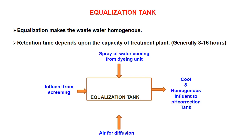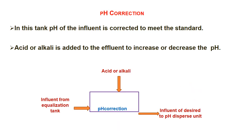Here we can see the equalization tank — it makes the wastewater homogeneous, and retention time depends upon the capacity of the treatment plant, typically 8 to 16 hours. The influent comes after screening into this tank, spray of water from the dyeing unit is added, air is infused, and everything is mixed together to get a cool and homogeneous influent with adjusted pH, which then goes to the pH correction tank. In the pH correction tank, acid or alkali is added depending on the nature of the influent to decrease or increase the pH to meet the standard.